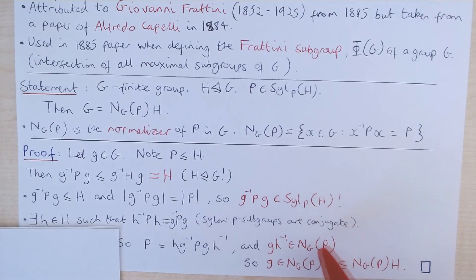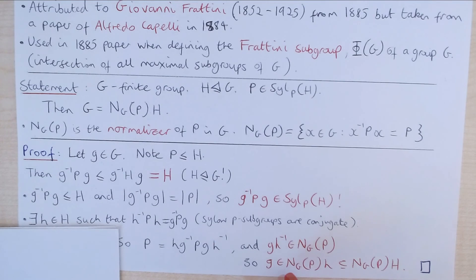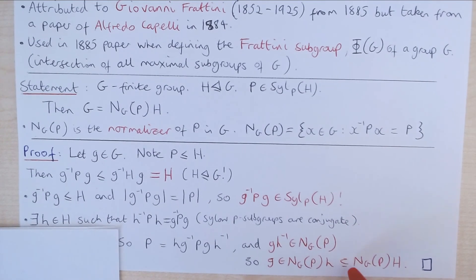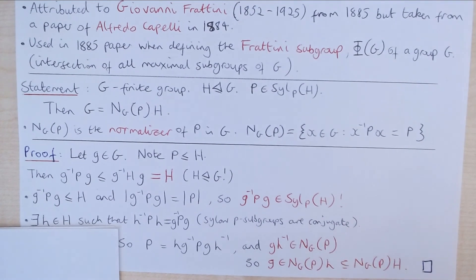And now if we apply H to the right-hand side of both sides of this, we get that the element G is in NGP small H, which is contained in NGP big H, and we have proven the lemma.